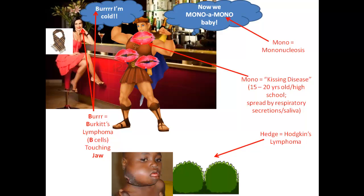A little bit more on that is that she's touching her jaw. And if you see the picture of the boy below, it reminds you that in Africa this disease is going to happen around the jaw area — you'll get the inflammation and all those lymphocytes there. Because those epithelial cells represent receptors for the Epstein-Barr virus. The scarf represents the nasopharyngeal carcinoma that can result as well, because the scarf gets wrapped around the neck — so that reminds you that area is the pharynx.